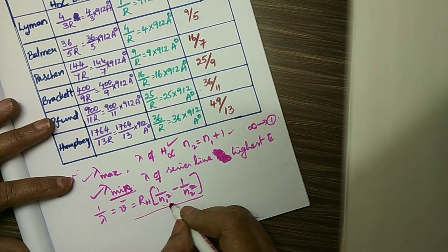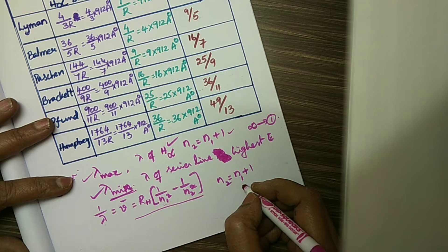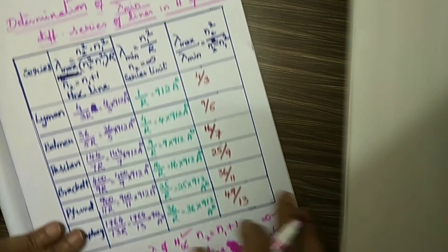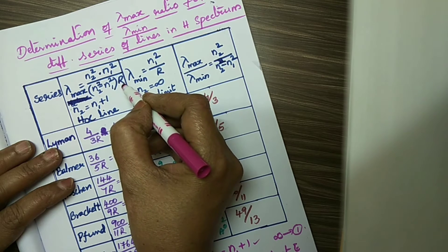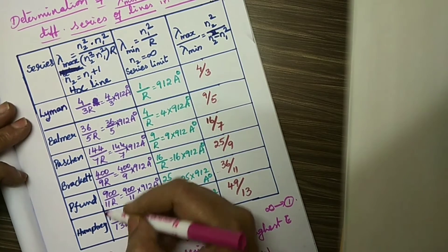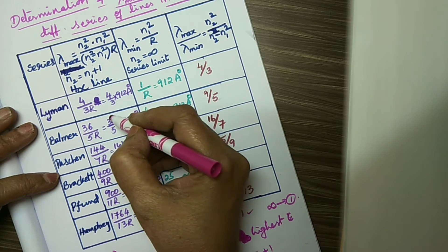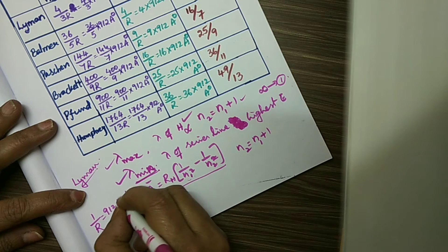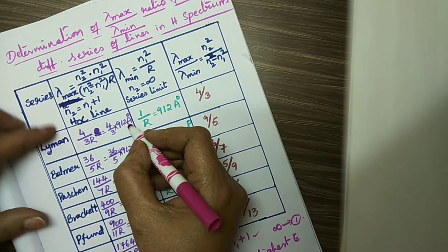N2 is equal to N1 plus 1. N1 is the lower shell to which the electron is coming. By substituting this, we get the formula: N2 squared times N1 squared divided by (N2 squared minus N1 squared) times R. This is the H alpha line. For different series — Lyman, Balmer, Paschen, Brackett, Pfund, and Humphreys — we get lambda max values. For Lyman, substituting values gives 4/3R. Since 1/R equals 912 angstrom units, lambda max for Lyman is 4/3 into 912 angstroms.